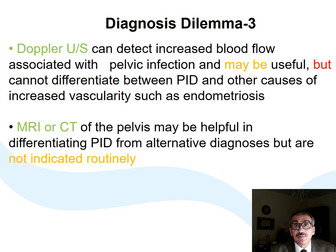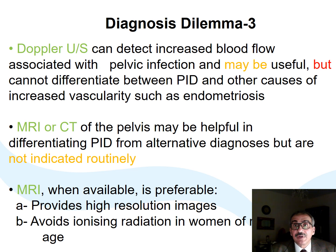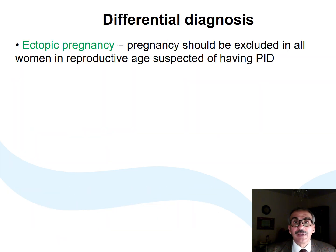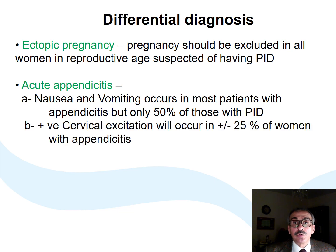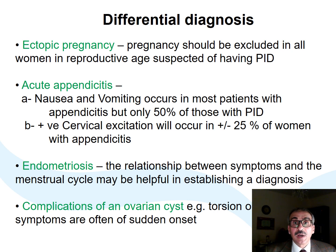Doppler ultrasound is non-specific and can only show increased vascularity, which is not uncommon with other conditions like endometriosis. More advanced imaging might be helpful in specific cases. MRI is the preferred imaging modality if available, especially in young ladies. Pregnancy tests should be performed during reproductive age to exclude pregnancy. A multidisciplinary approach with surgical review might be indicated, as acute appendicitis can present with similar symptoms. A good menstrual history taking might help differentiate between PID and endometriosis.